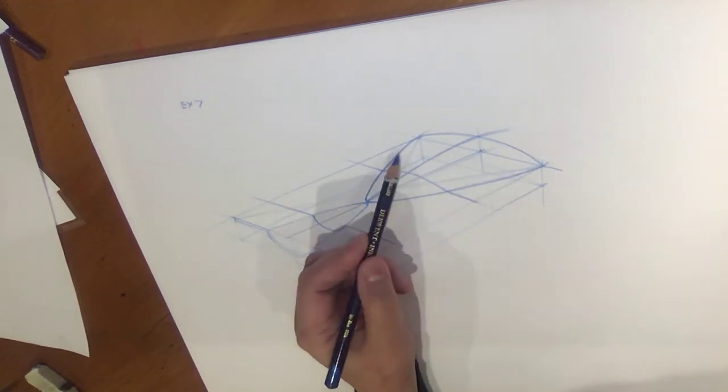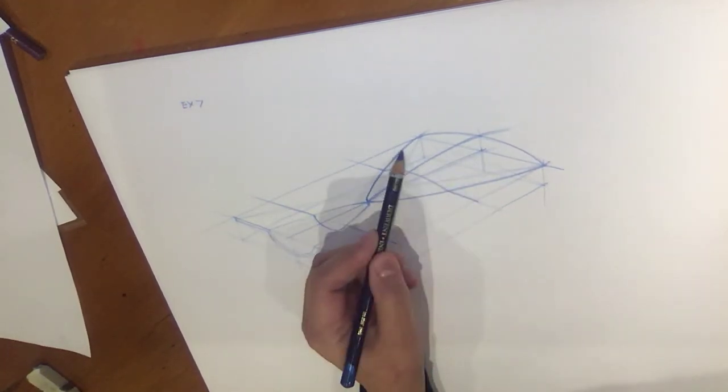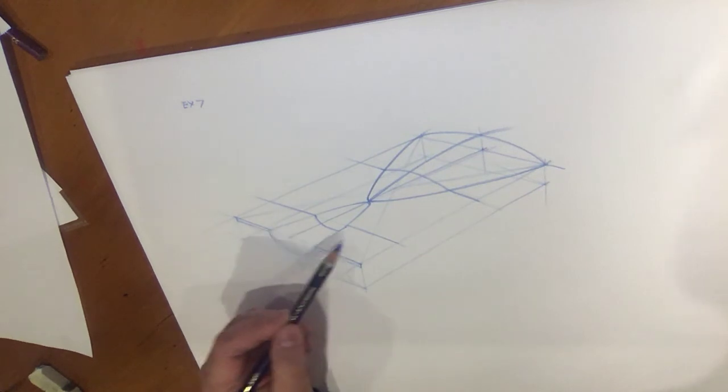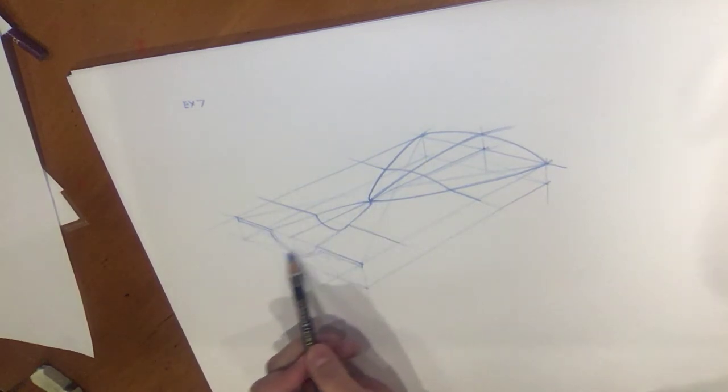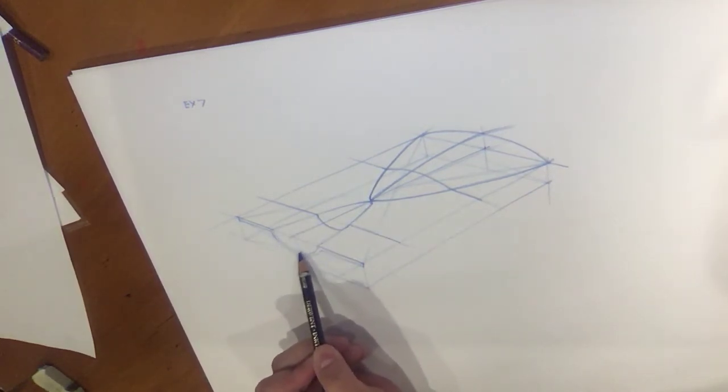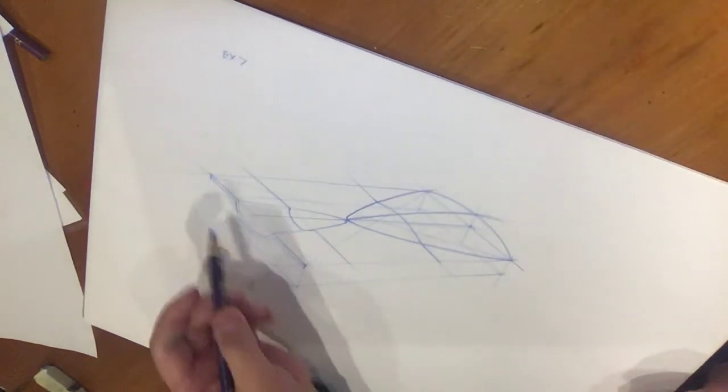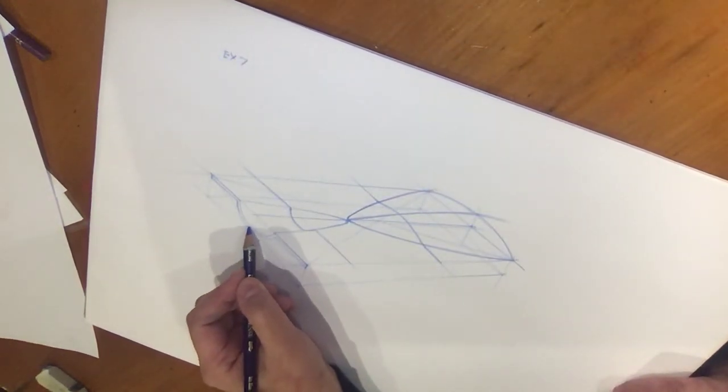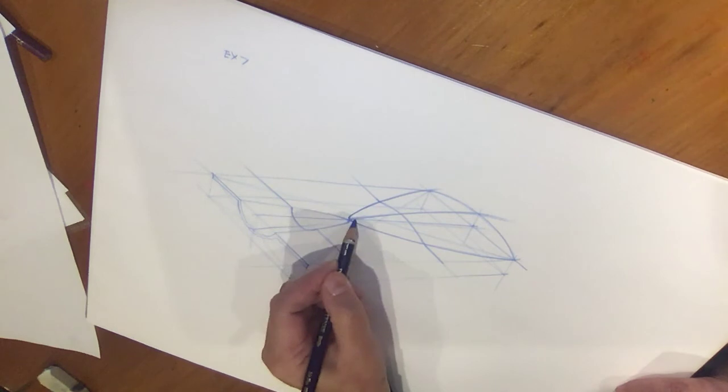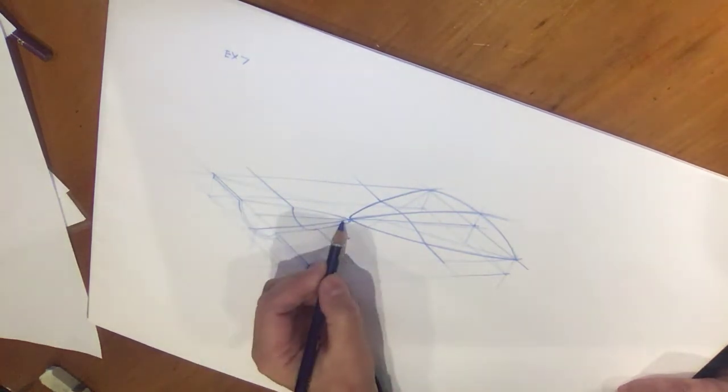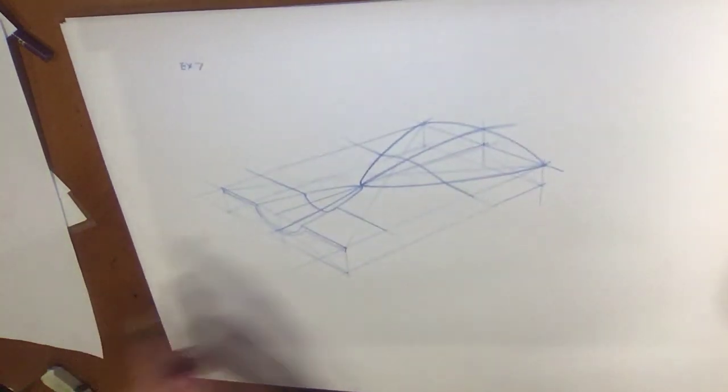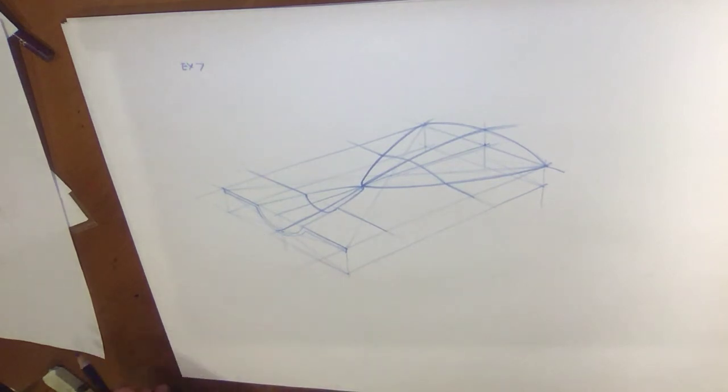So this surface is convex, and this surface is concave. And I might actually also put another contour line in through here just to show that there's a dip in here.